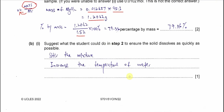Part B1: suggest what the student could do in step 2 to ensure all the solid dissolves as quickly as possible. The easiest answer is to stir the mixture, because stirring helps solids dissolve faster. Alternatively, we can increase the temperature of the water to increase solubility, though this depends on the enthalpy of dissolution.